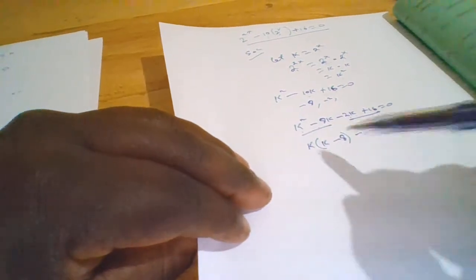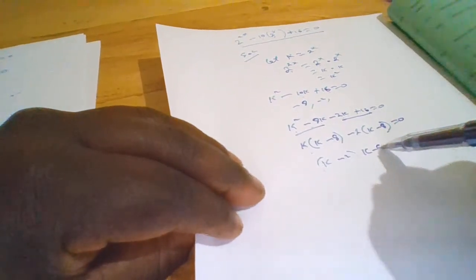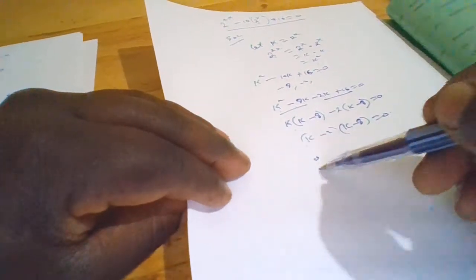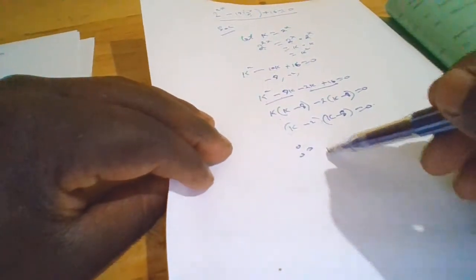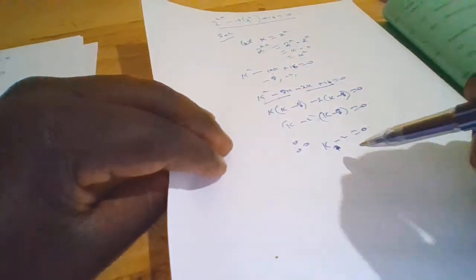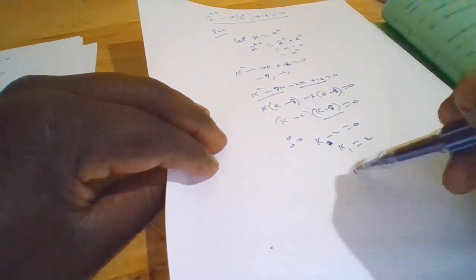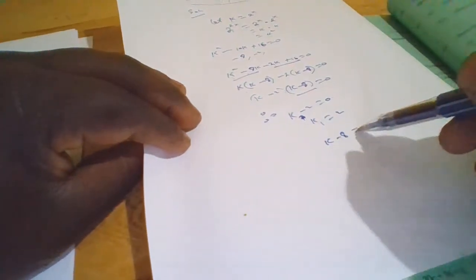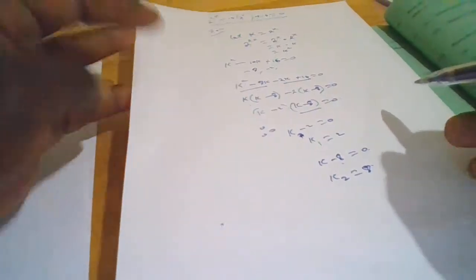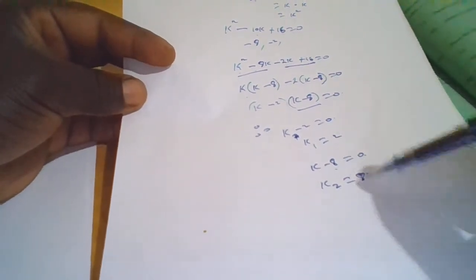Factoring completely: (k minus 2)(k minus 8) equals to 0. Therefore k equals to 2 or k equals to 8. We have two values of k: k₁ equals 2 and k₂ equals 8.